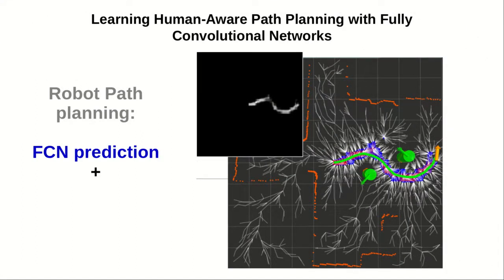For safe motion planning, the network prediction is employed by an RRT planner in two ways: first, to partially bias the sampling space, and secondly, as a cost function to build the tree.